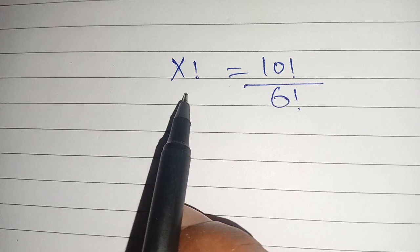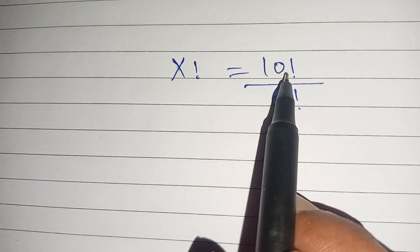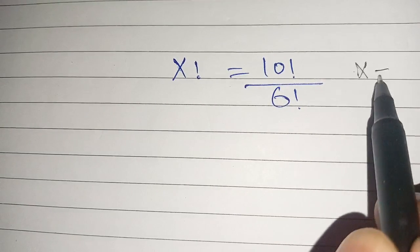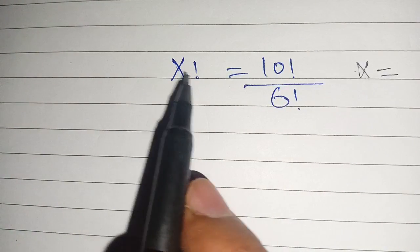Hello everyone, how to solve this factorial problem: x factorial is equal to 10 factorial divided by 6 factorial. We have to find the value of x which satisfies this problem.